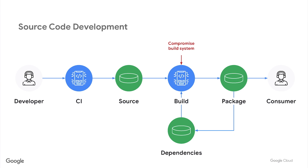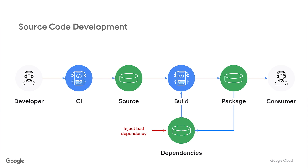Attackers could also compromise your build system. In 2020, software updates were sent out to SolarWinds customers after malicious actors injected code into their build system. Attackers can compromise package manager accounts — this happened to an NPM account due to an expired domain, and the attacker reset account passwords. Attackers could also compromise third-party software dependencies that your software relies on. An example of this is typosquatting. In July, researchers uncovered a widespread campaign to install malicious NPM modules that would harvest sensitive data.